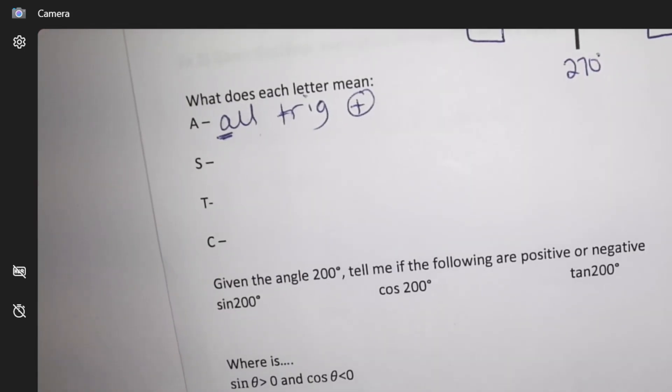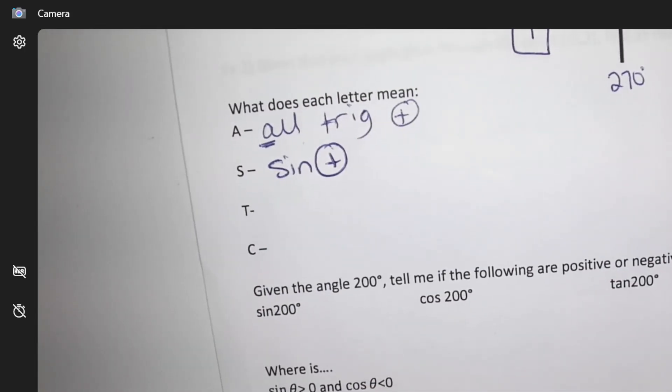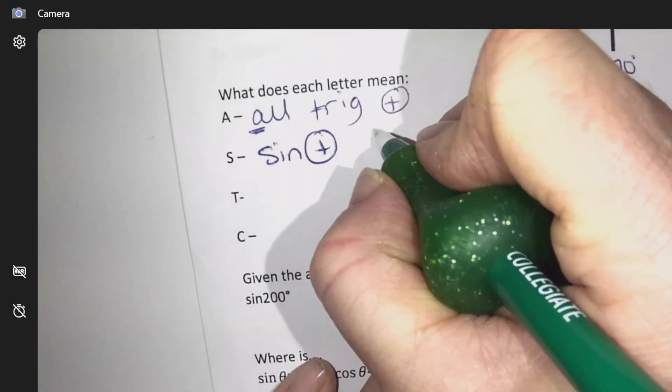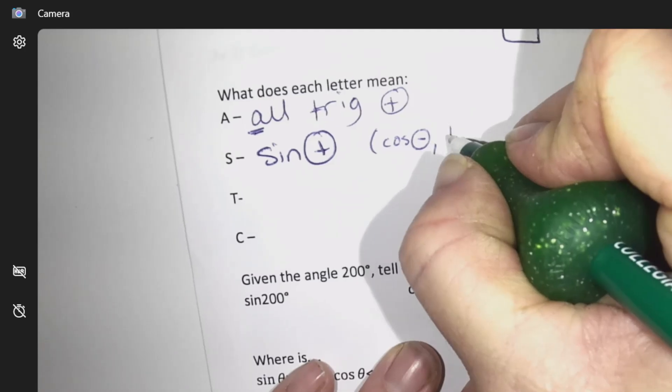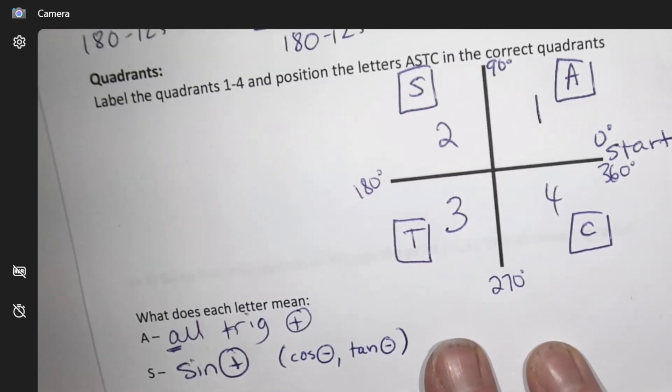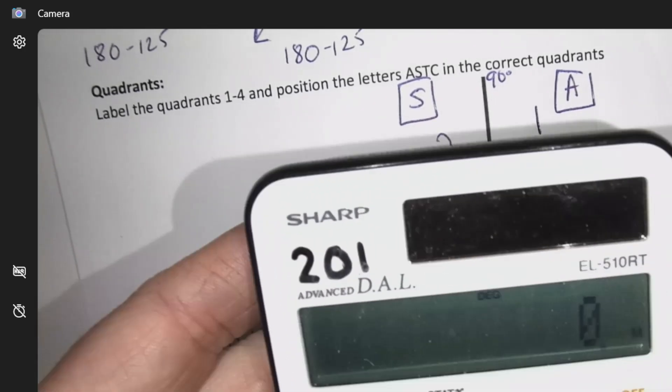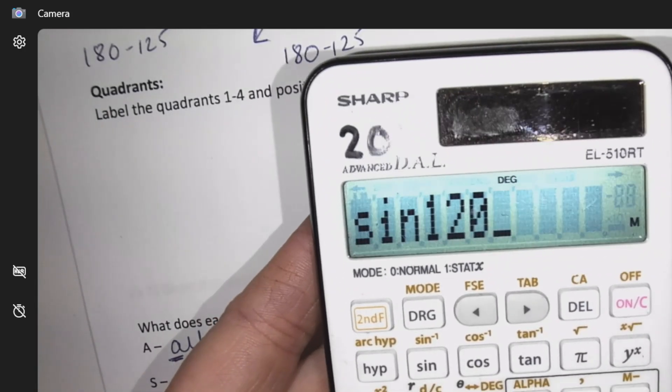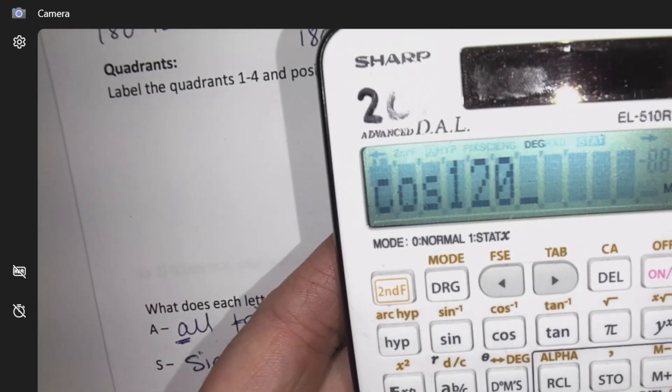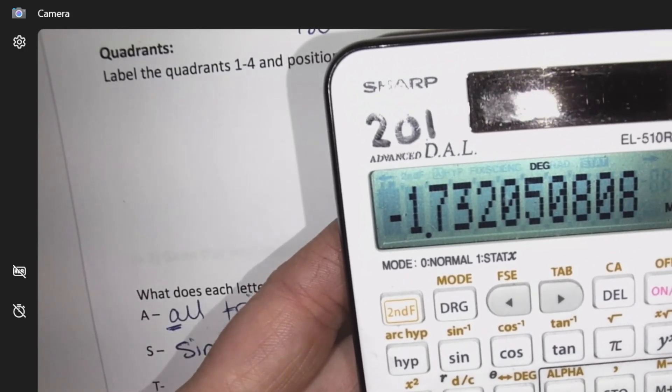Then we have S. So S means sine is positive. That's it. What would that also tell me? Cos is negative. Tan is negative. Some random number in quadrant 2. 120. On my calculator, the sine of 120 is positive. Cos of 120, we said it should be negative value. Tan of 120, we said it should be negative.